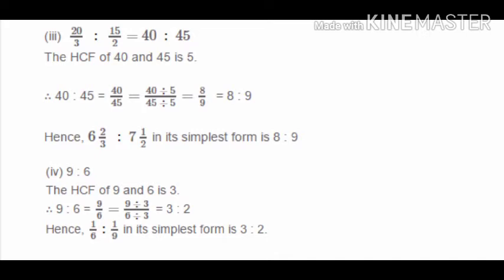For Question 1 part 3 involving mixed fractions 20/3 and 15/2, we use cross multiplication — a property of extremes and means. So 20 × 2 = 40 and 15 × 3 = 45, giving us 40:45. The HCF of 40 and 45 is 5. Dividing both by 5 gives 8:9 as the simplest form.